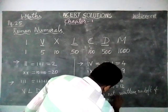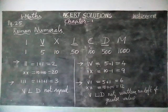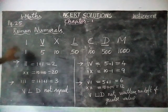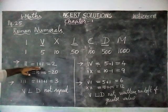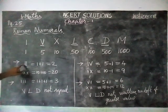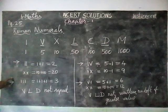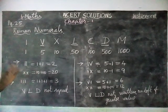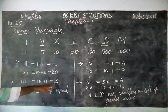Now I am repeating again. The first rule: if a letter is repeated, the value will be added. Two times repeated, we add the value. Second concept: a letter can be repeated maximum of 3 times — I, I, I is equal to 1 plus 1 plus 1 is equal to 3. And V, L, D will not be repeated at any cost.